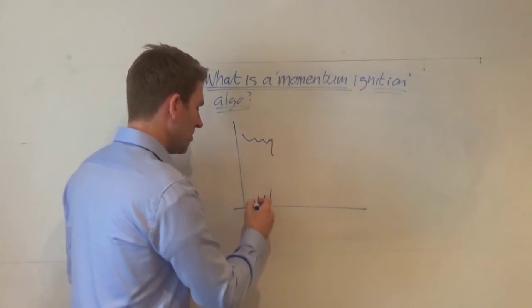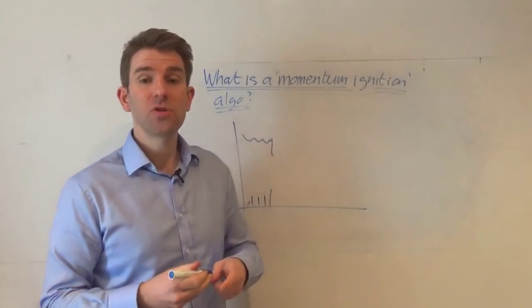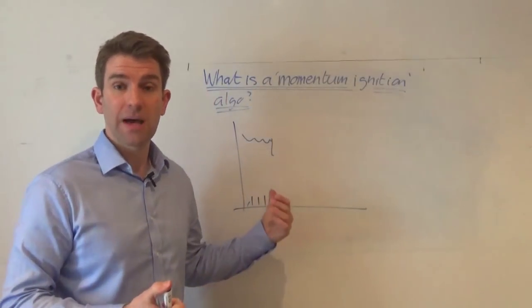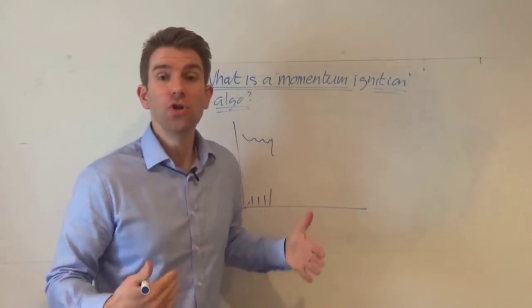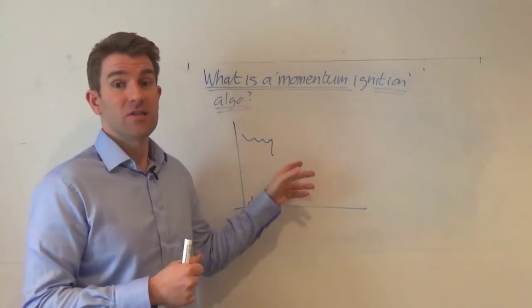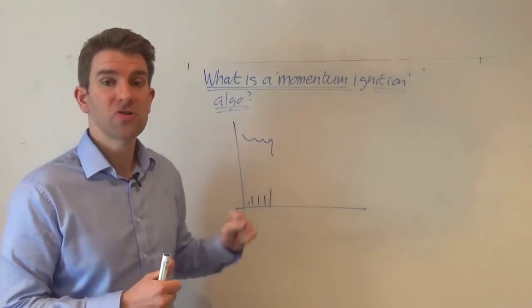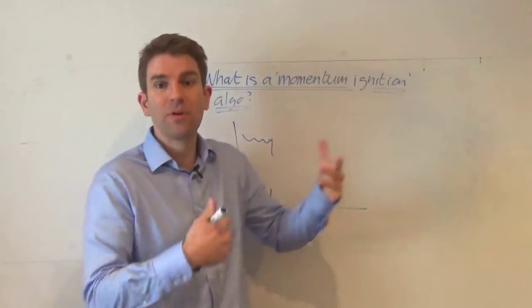You've got a price here and let's say price is chugging along and they just give it a little bit of a nudge to the downside on some high volume. All other algos are going to see that and a lot of other algos are programmed to respond to that by joining the herd because this might be a precursor to news.